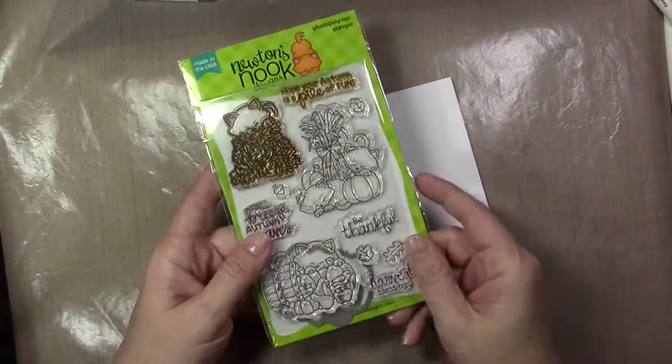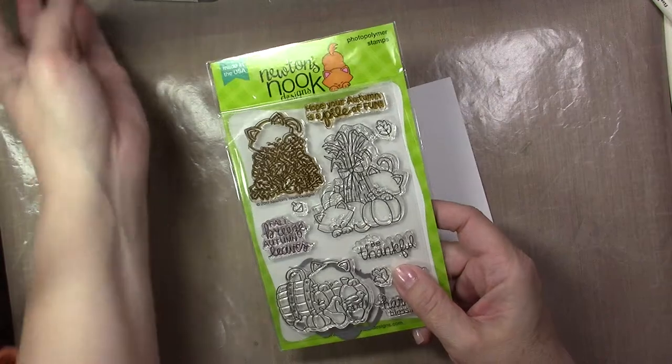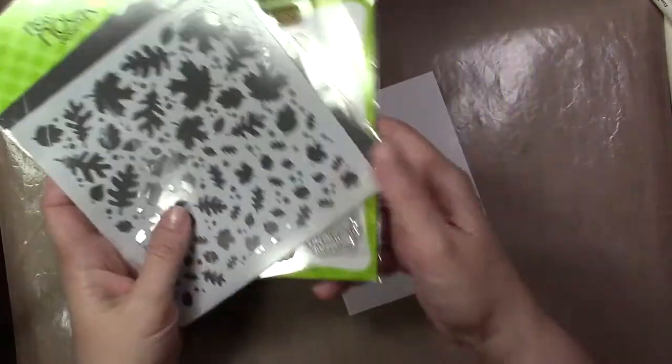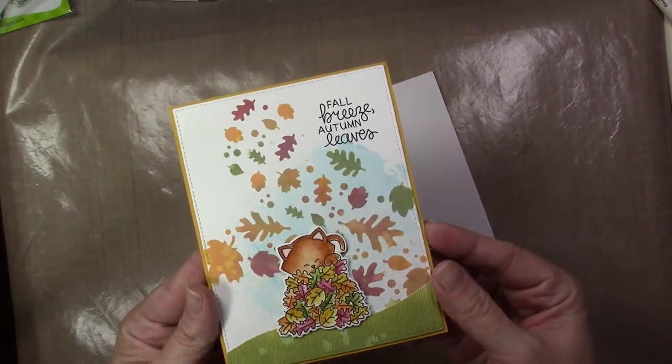Hey everybody, I'm back today for Newton's Nook and today we're going to be using this cute Autumn Newton stamp set as well as the coordinating die, the Falling Leaves stencil, and I'm going to be using the Land Borders die set. So we're going to go ahead and get started.